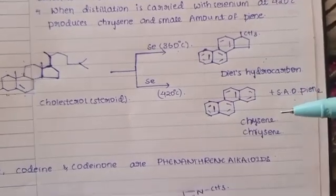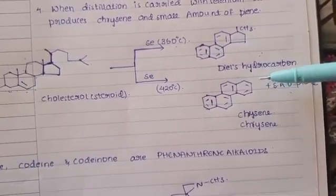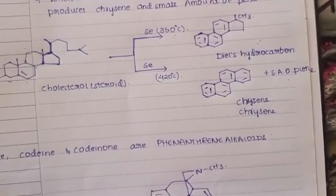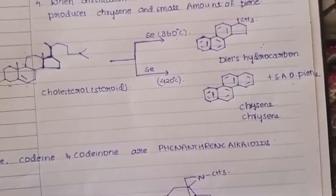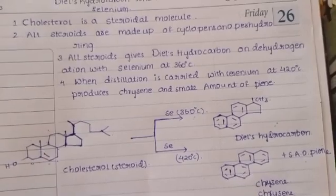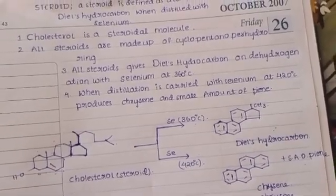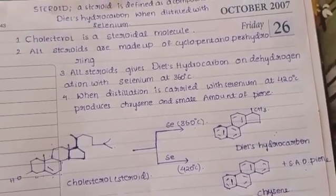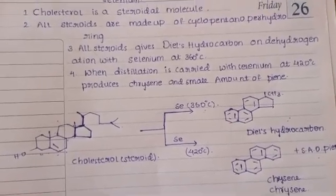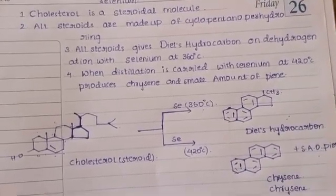When it comes to four benzene structures, we get chrysene — four fused benzene rings — and a small amount of pyrene. This is the complete information about steroids that I have learned and wanted to share. Thank you.